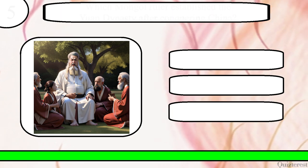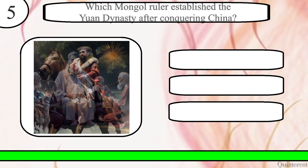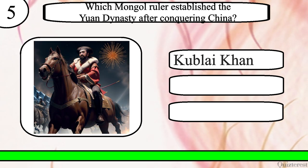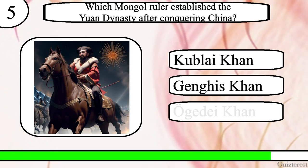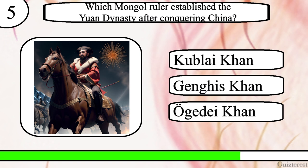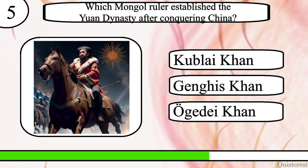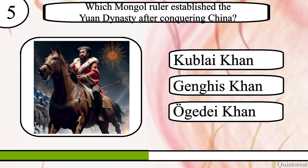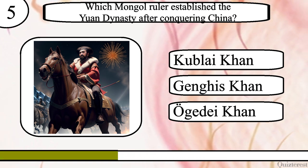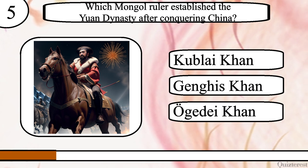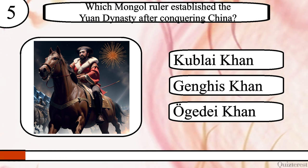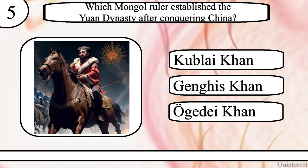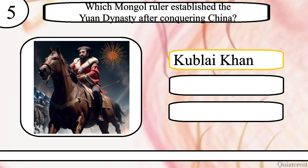Question 5. Which Mongol ruler established the Yuan dynasty after conquering China? Kublai Khan, Genghis Khan, or Ögedei Khan? The correct answer is Kublai Khan.